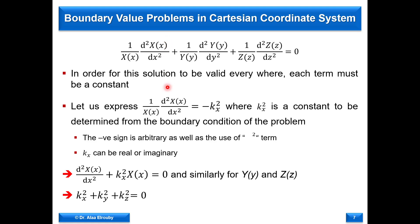We set the constant for the X term as minus K_X squared. The negative sign and the square are arbitrary conventions. The derivation with plus K_X or K_X squared gives the same solution with different levels of difficulty — choosing minus K_X squared is the easiest format, as you will see.